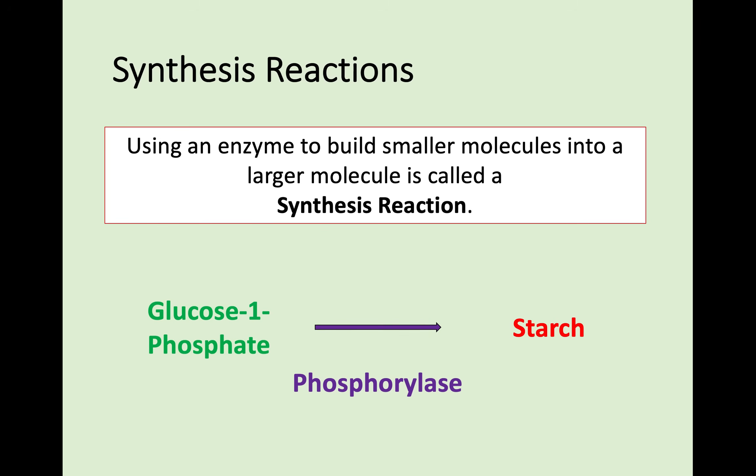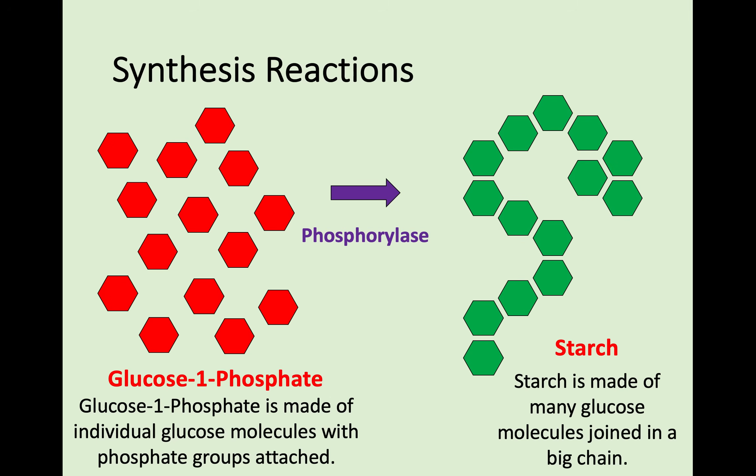The opposite of degradation is a synthesis reaction. If you use an enzyme to build up smaller molecules into a larger molecule, this is a synthesis reaction. An example of this is glucose 1-phosphate, which can be converted into starch — a large molecule — through an enzyme called phosphorylase. The diagram shows this: glucose 1-phosphate consists of individual glucose molecules with phosphate groups attached, and phosphorylase builds these up into starch. So small molecules into a large molecule through an enzyme is a synthesis reaction.